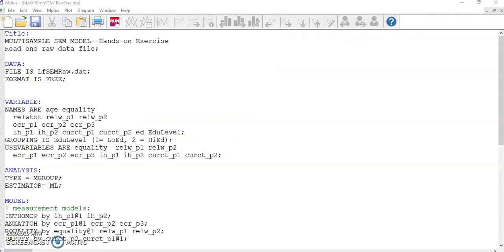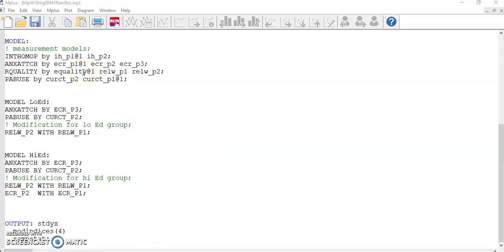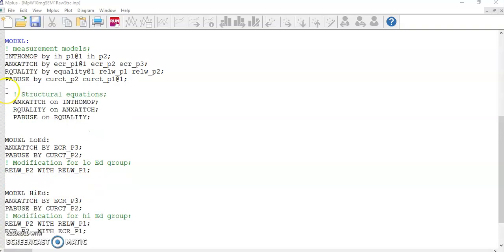Open up the Mplus command file for the final measurement model, in which you should see the overall CFA structure along with the modifications you made to individual groups. Simply add the structural relations to the model section.